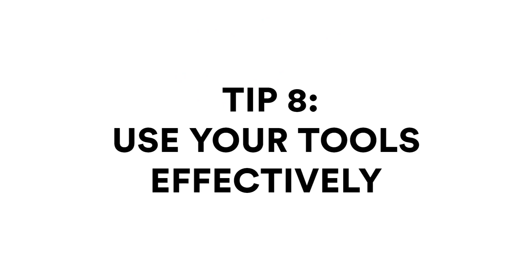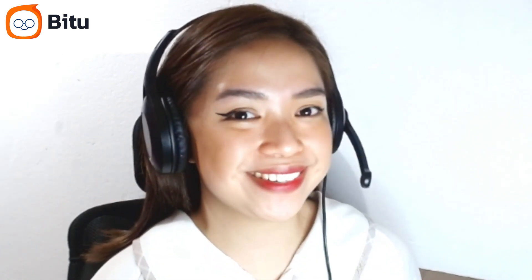Tip number eight, last but not the least: use your tools effectively. Here in B2, we already have vocabularies available, so incorporate these words in your class to allow effective learning. Don't forget about the chat box — you can use it as a way to communicate with the student, especially when adding new words to your class, and to check if they have questions. You can also provide translations only if necessary, and one of the most vital functions of the chat box is to jot down all the necessary corrections made during your class.